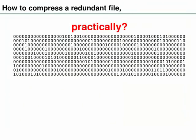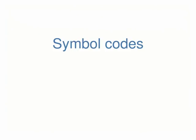That was a rather impractical approach to compression — it involved a very large bin bag full of tickets. For the next two lectures we're going to discuss practical data compression. How would we compress a bent coin practically? That's a homework exercise. Today I'm going to talk about a method called symbol codes.